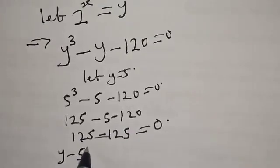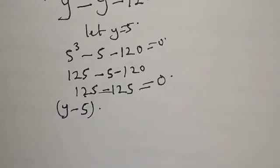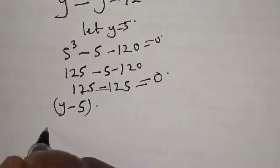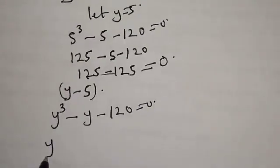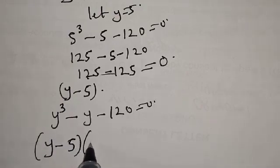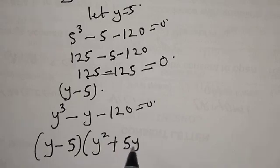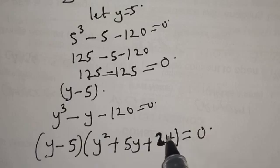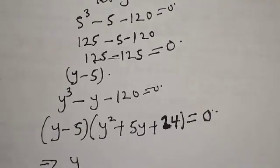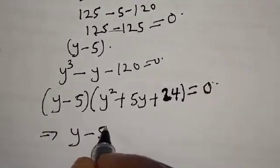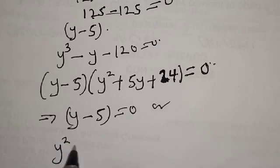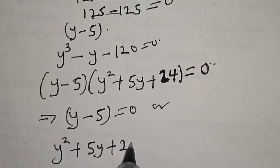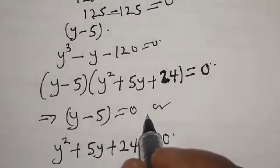Therefore Y minus 5 is one of the roots. From Y cubed minus Y minus 120 equals 0, we factor to get Y minus 5, multiplied by Y squared plus 5Y plus 24, equal to 0. So we have two cases now.